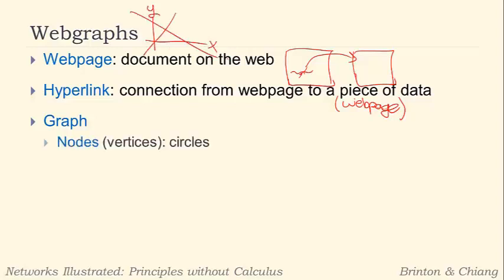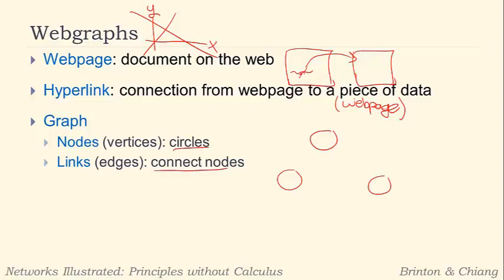We're referring to a structure, a mathematical structure that has nodes, which are also known as vertices. And those are represented typically as circles. So we have these nodes and we have links or edges. Those are kind of interchangeable—it's either vertices or edges or nodes and links. And the nodes are circles and the links connect the nodes together.